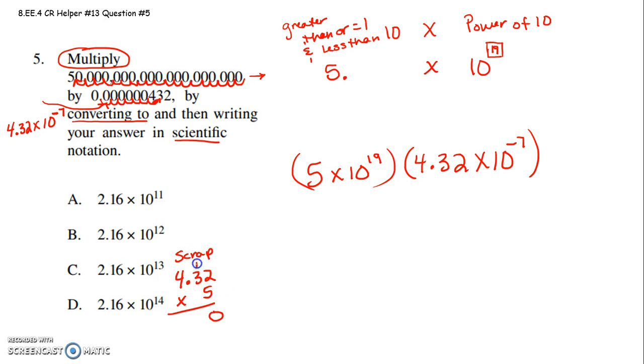5 times 2 is 10, put down a 0, carry a 1. 5 times 3 is 15, and 1 more is 16, put down a 6, carry a 1. 5 times 4 is 20, and 1 is 21. I knew my answer had to be somewhere around 20, so my decimal point is going to go right here: 21.60.